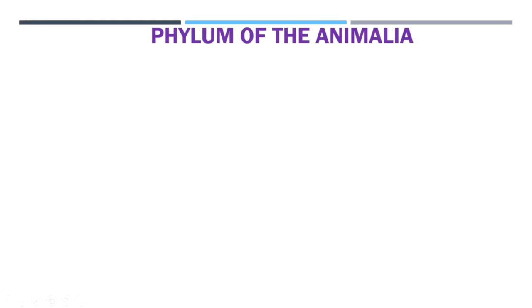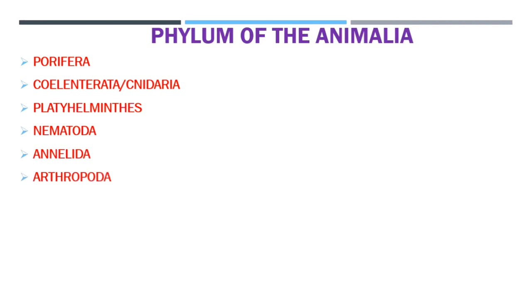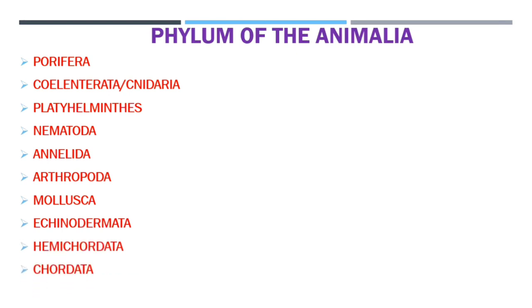The different phyla of Animalia are: Porifera, Coelenterata or Cnidaria, Platyhelminthes, Nematoda or Nemathelminthes, Annelida, Arthropoda, Mollusca, Echinodermata, Hemichordata, and Chordata. Now we are going to learn about these different phyla of the Animalia Kingdom.